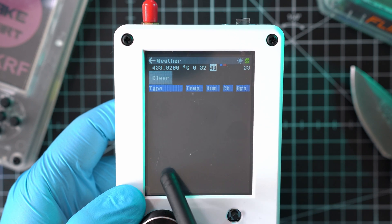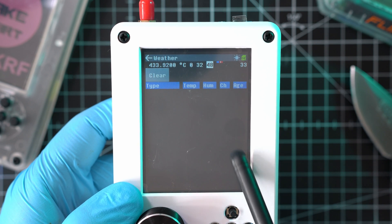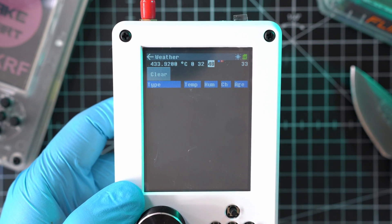Next is clear button, type of sensors, capture temperature, humidity, channel, and age of packets received shown in seconds.